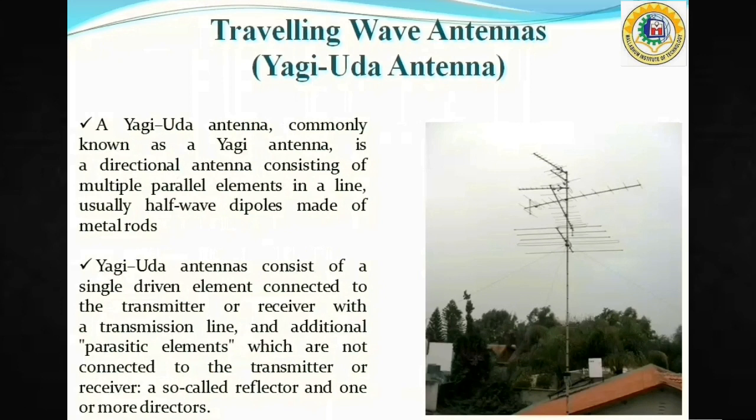The travelling wave antennas, or the Yagi-Uda antenna. A Yagi-Uda antenna, or more commonly a Yagi antenna, is a directional antenna consisting of multiple parallel elements in a line, usually half-wave dipoles. In the figure we can see a Yagi antenna installed on the top of a building.